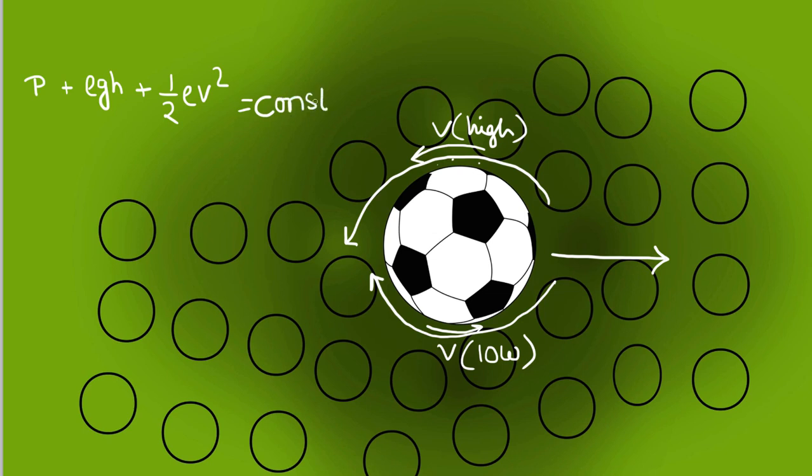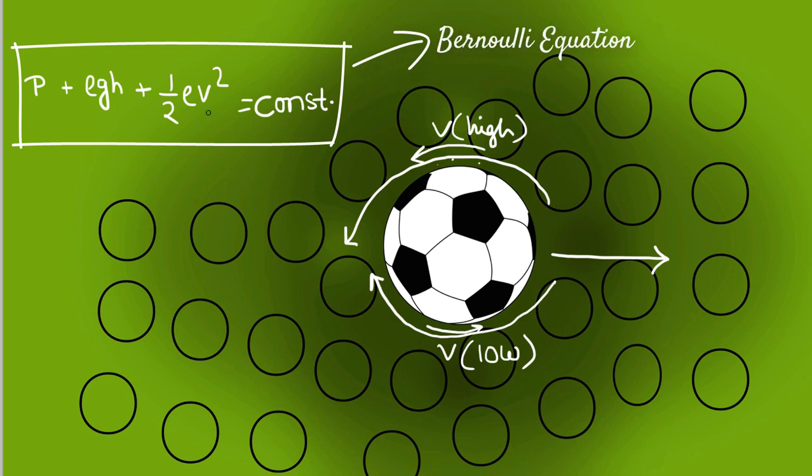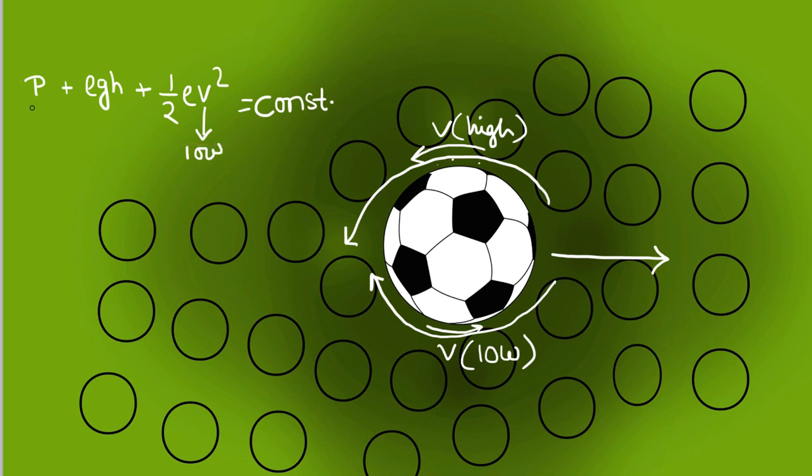Now the height is the same on the two sides, but the velocity to one side is low, hence the pressure at that side will be high. Whereas on the other side where velocity is high, the pressure will be low.